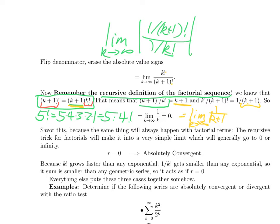Every time we see a factorial, the exact same argument will happen. You will see a k factorial and a (k+1) factorial, and you cancel them out leaving a (k+1). Because the limit is 0, r equals 0. Since 0 is less than 1, the series is absolutely convergent. The moral is that k factorial grows faster than any geometric series, so 1 over k factorial is getting small faster than any geometric series — it's acting like a geometric series with r equals 0.